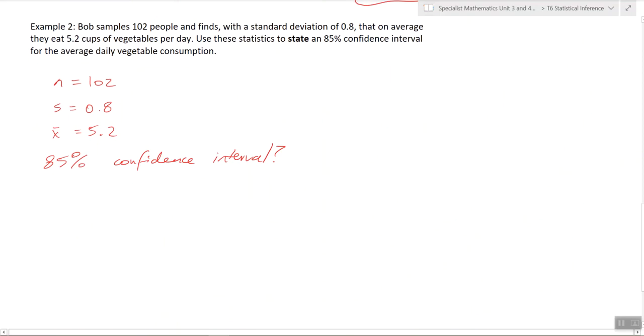So, example 2, it gives us all of that stuff. What do you think is the first step? Finding the z value. Very good.